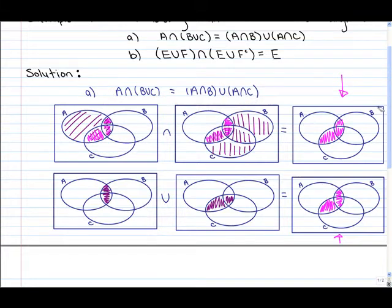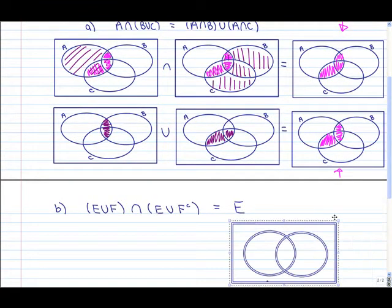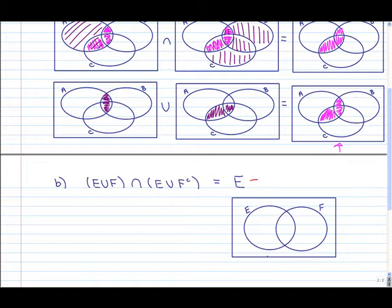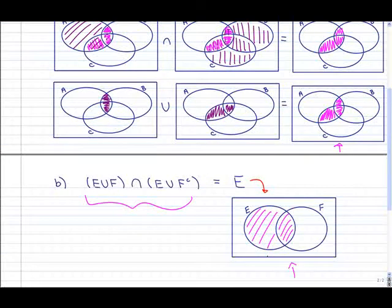For part B we want to show that (E union F) intersect (E union F complement) is equal to just E. The right hand side is pretty simple — there are only two sets, so the Venn diagram has two circles labeled E and F. The shaded region of just E is this region here plus the center, representing the entire circle of E.